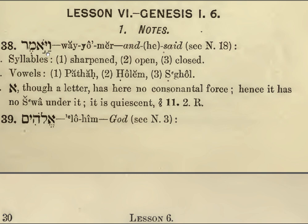The vowels: this one here is called a PATAH, this dot is a CHOLEM, and this is a SEGOL. The ALEPH here has got no force as a consonant, and so it has no SHVA underneath it, telling us that it's not a consonant.